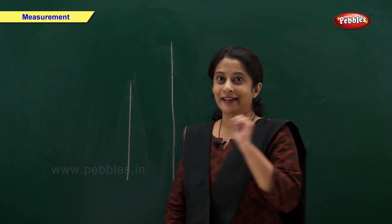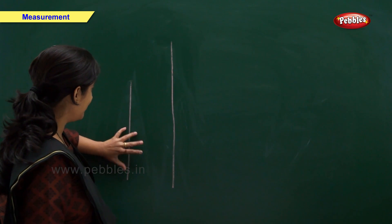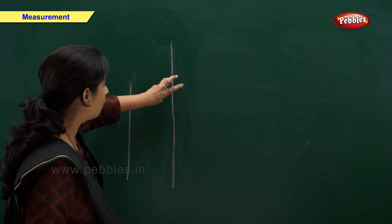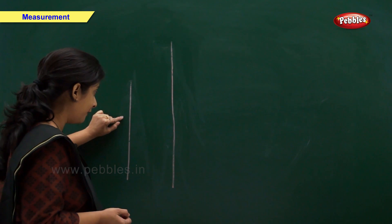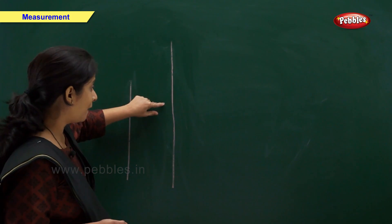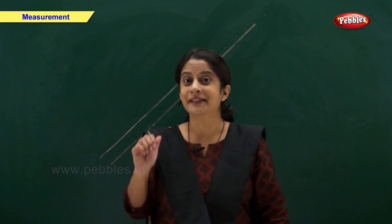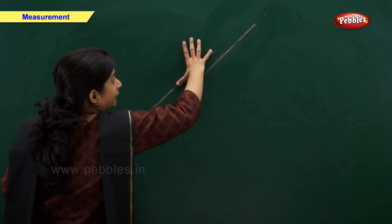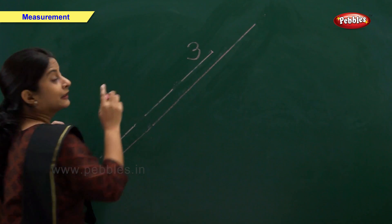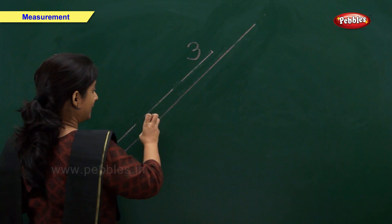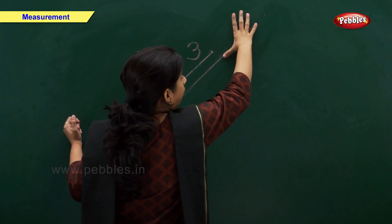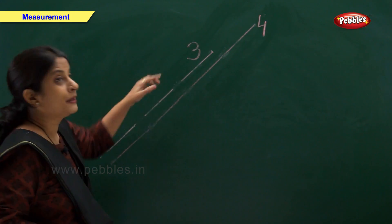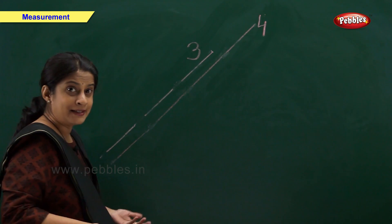Length of this line is my two spans. Now let us measure these lines. One, two, three — two spans. Length of this line is my two spans and length of this line is my three spans. Now let's measure these lines. One, two, three — three spans. One, two, three, four — four spans. Length of this line is my three spans and length of this line is my four spans.